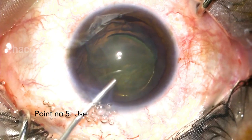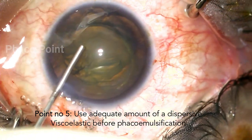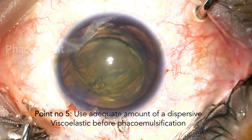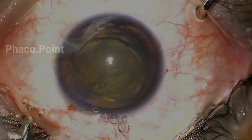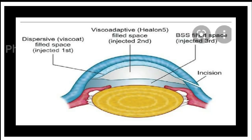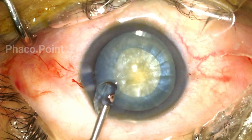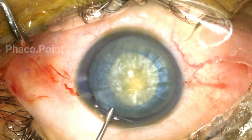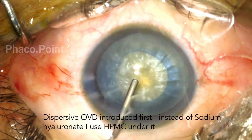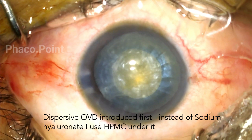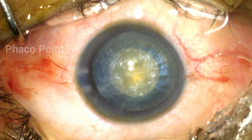Point number five: prior to phacoemulsification, an adequate amount of dispersive viscoelastic is injected into the anterior chamber to protect the corneal endothelium during nucleus emulsification. In the soft shell technique, the surgeon first introduces a dispersive viscoelastic, followed by a cohesive viscoelastic injected under it, causing the dispersive viscoelastic to coat the corneal endothelium. In my modification, the dispersive viscoelastic is introduced as a bolus and HPMC is injected deep to it, creating a protective layer coating the corneal endothelium.